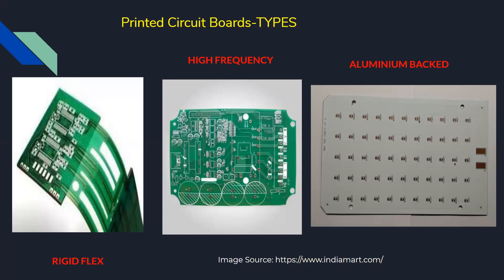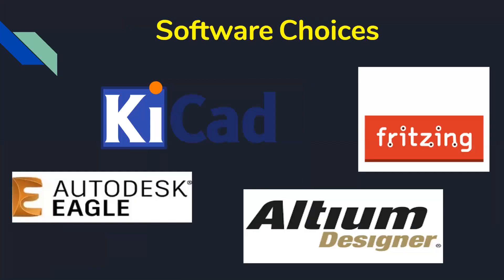High-frequency PCBs generate frequency ranges typically from 500 MHz to 2 GHz and are used for critical applications such as communication systems and microwave PCBs. The last category is aluminium-backed PCBs, used for high-power applications. The aluminium construction helps dissipate heat, offers high rigidity, and helps control thermal expansion. These PCBs are suggested for applications requiring high mechanical tolerance. So the PCB types are: single-sided, double-sided, multi-layer, rigid, flex, high-frequency, and aluminium-backed.